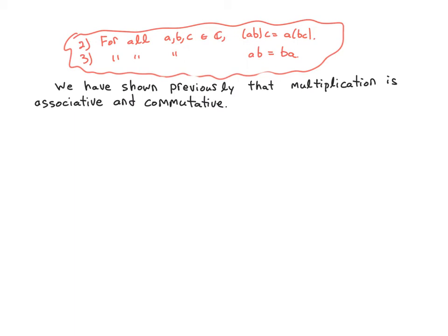All right, so that's it for addition. You still have to look at the axioms involving multiplication. The first one is that if you multiply three complex numbers, you can move the parentheses, and that multiplication is commutative. The good news is that we have actually shown both of these in a previous video, back when we were studying groups and showed that non-zero complex numbers form a group. You can go back to that video and check that the proof did not use the assumption that these were non-zero, so those proofs were correct for all of C.